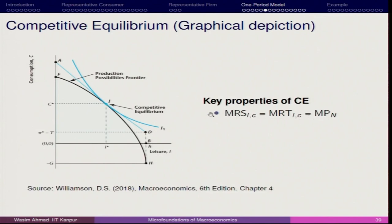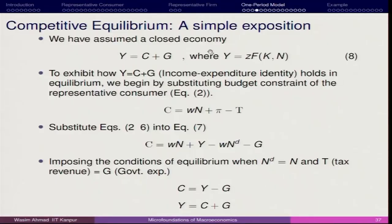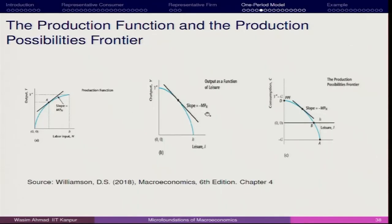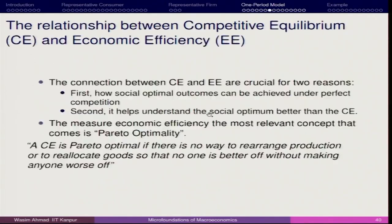I will be stopping here and in the next class we will talk about the inference. The most critical part to understand is that when we assume the closed economy Y = C + G, introduce the representative consumer and representative firm, how we deduce and derive the closed economy setup. I will take this further, mentioning these cases again, and then we will go to the role of the social planner. Thank you so much for your attention.